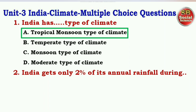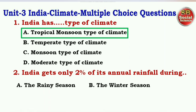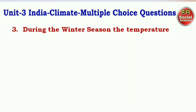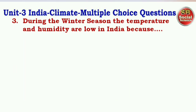Next question: India gets only 2% of its annual rainfall during — options are the rainy season, the winter season, the summer season, the retreating monsoon season. The right answer is option B — India gets only 2% of its annual rainfall during the winter season.